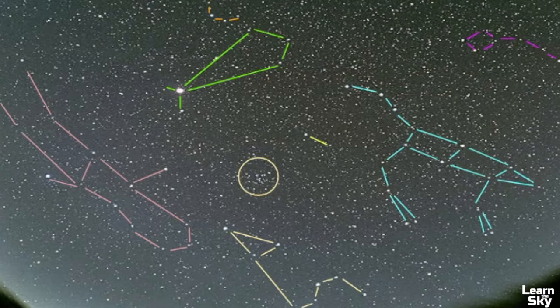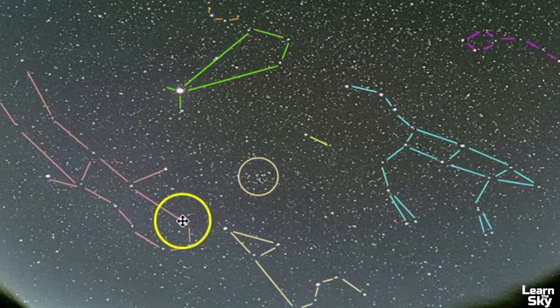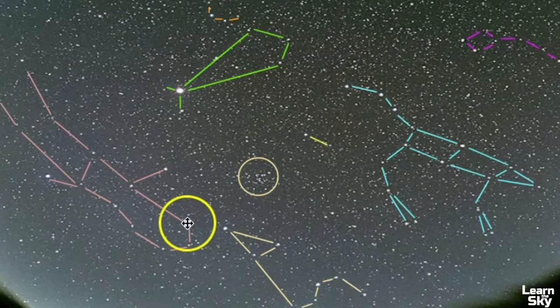Here are the constellations to point out for everybody: we have Ursa Major, Ursa Minor, Boötes, Corona Borealis, this big one is Virgo, we have Canes Venatici, Coma Berenices, and Leo the Lion. So if we were to point out the Spring Triangle, that's one version, and then that's where the Spring Diamond would be. Use these different pictures to help you familiarize yourself not only with the asterisms but also with the constellations.